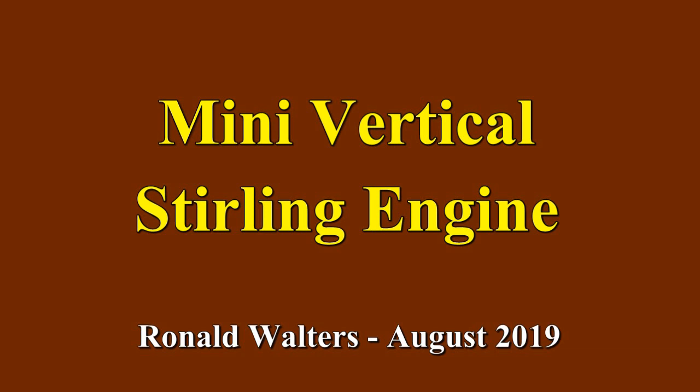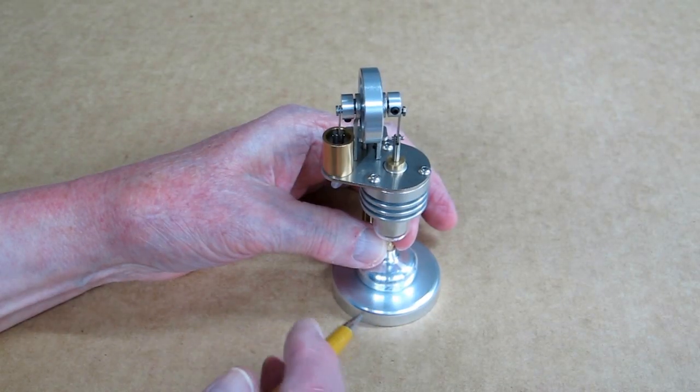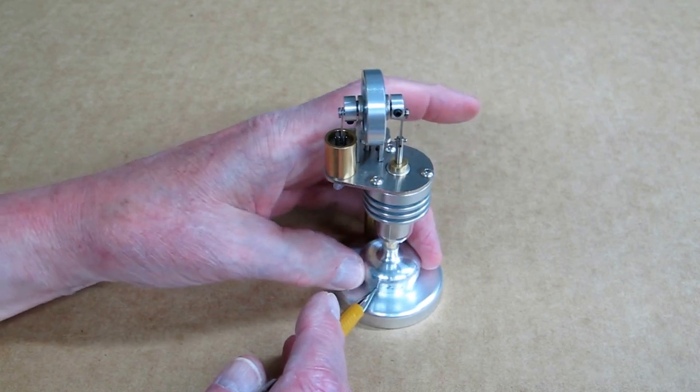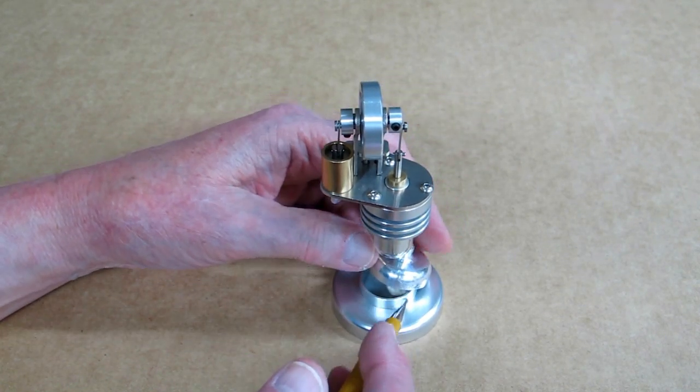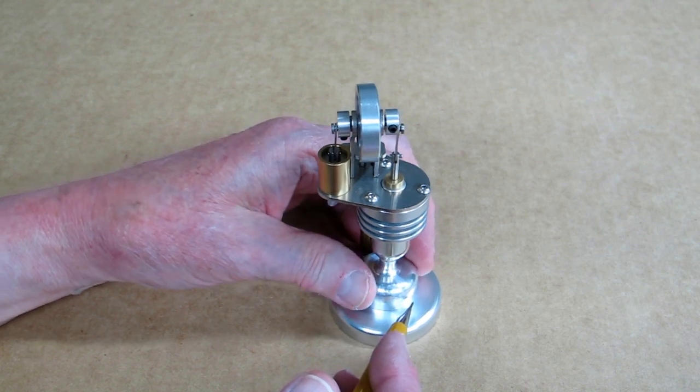This is just a small sterling engine. You have this alcohol burner down here, and you take the top off of that, fill that with alcohol, and then put the top back on it.